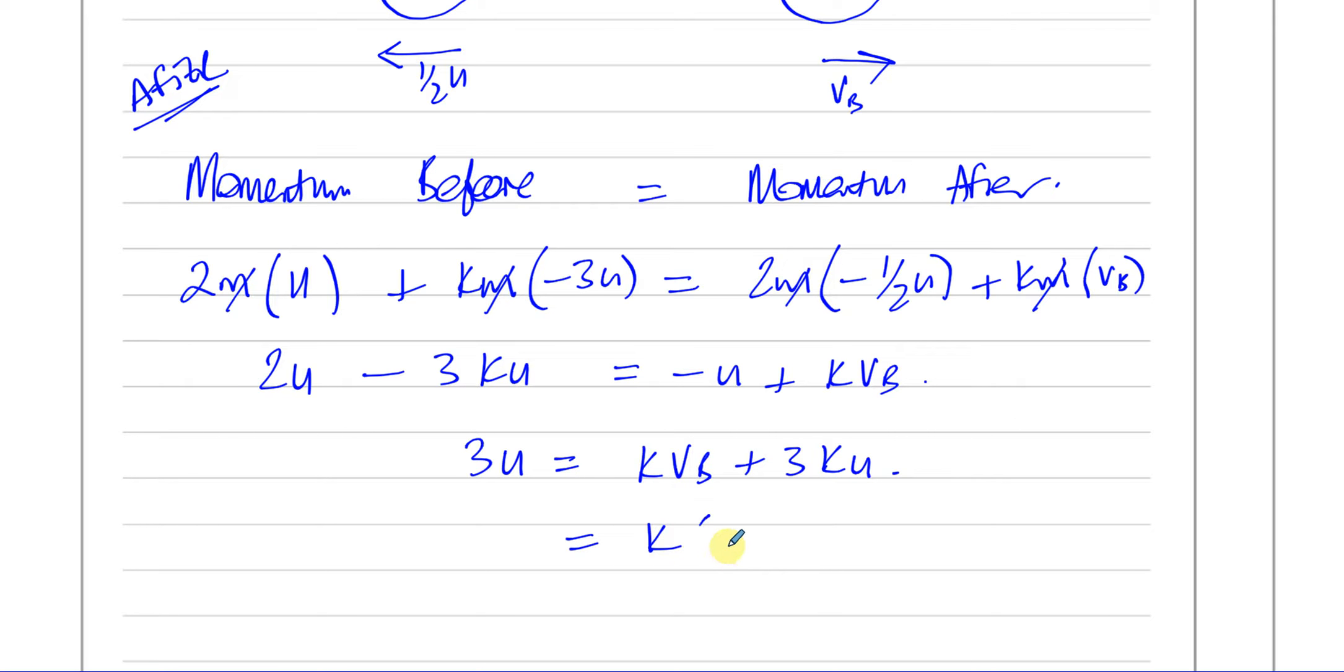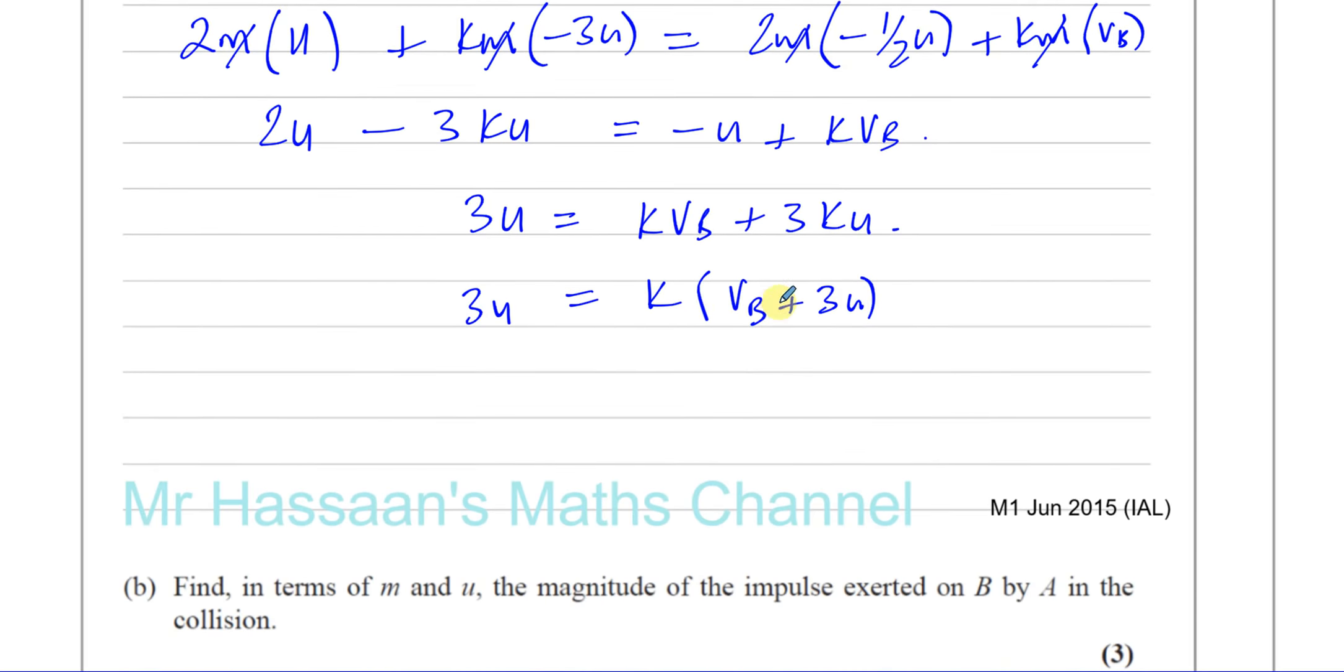So we've got K times VB plus 3U. And this is 3U. So now we're going to divide both sides by VB plus 3U. So you have 3U divided by VB plus 3U.